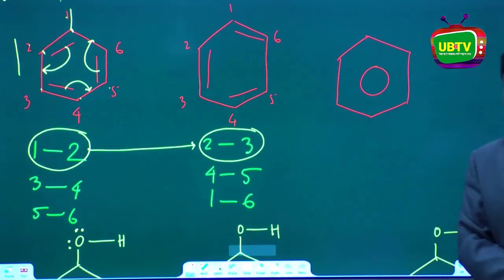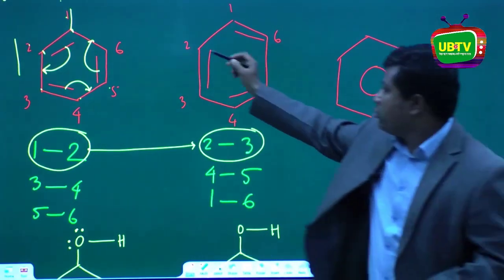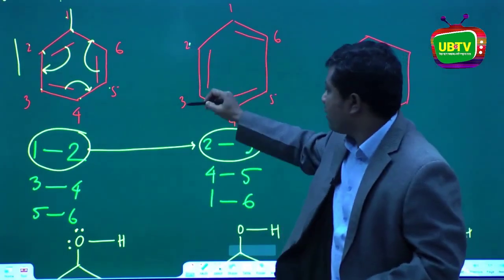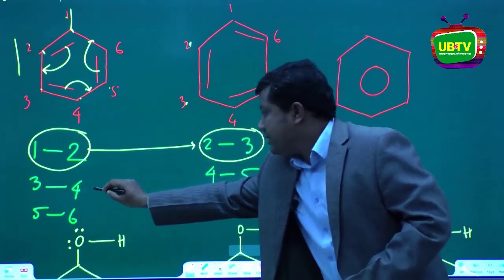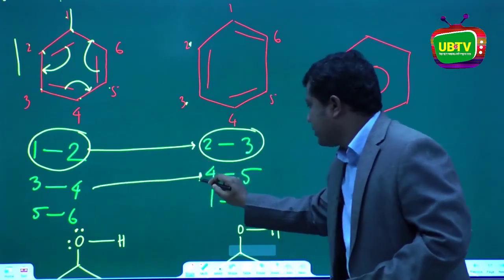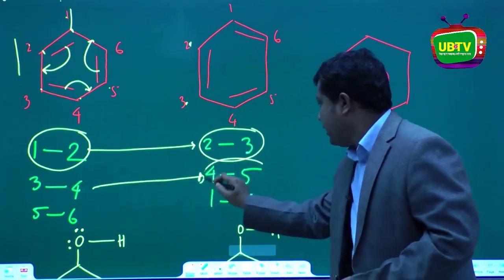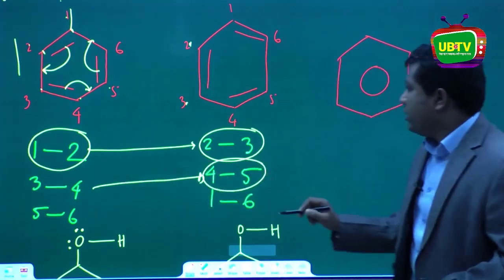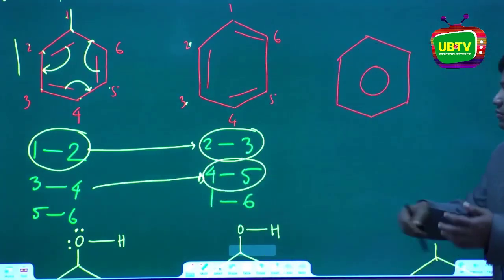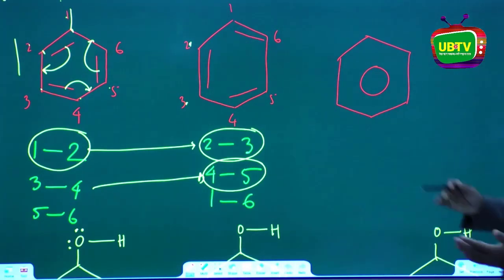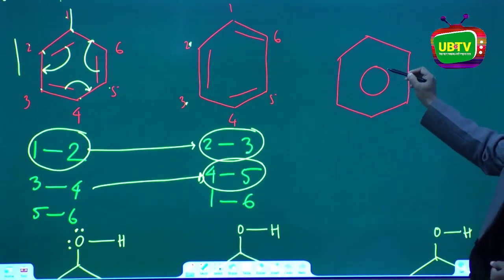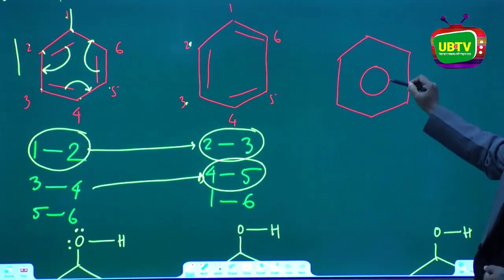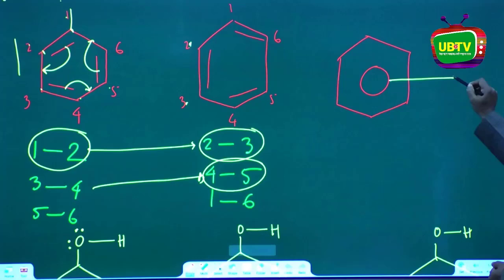We are seeing two-three numbers. In the middle of the third number is the same. It is 4. This is the first number of the number. This is the reason why we have been saying the benzene ring.